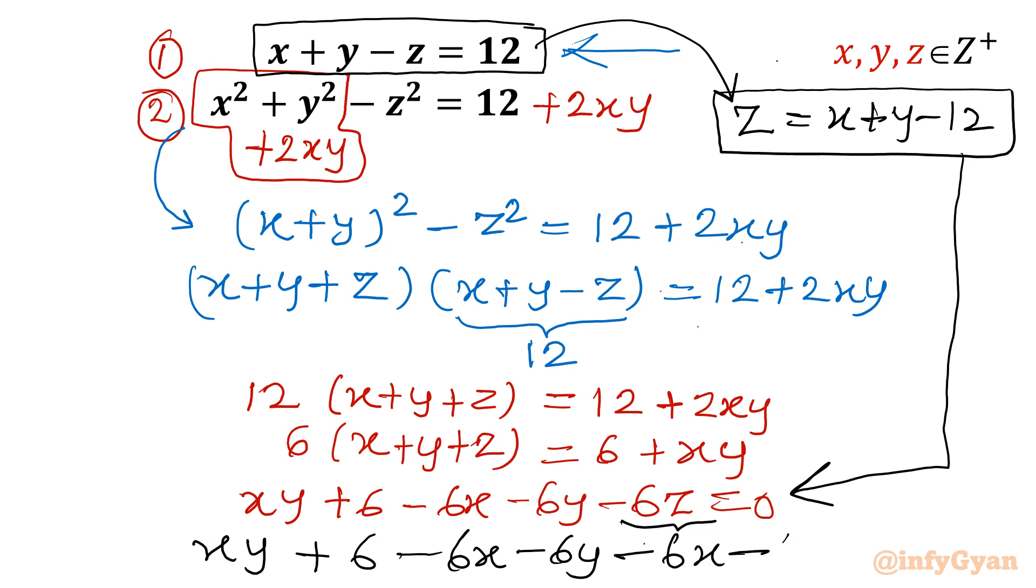So I will be writing this equation as xy plus 6 minus 6x minus 6y minus 6 times x plus y minus 12. So minus 6x minus 6y plus 72 equal to 0. Now once I will simplify, minus 12x, minus 12y, 6 plus 72 equal to 78. So ultimately this equation will convert to xy minus 12x minus 12y plus 78 equal to 0.